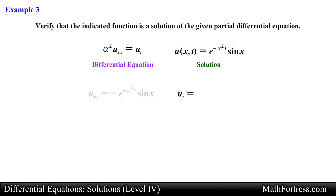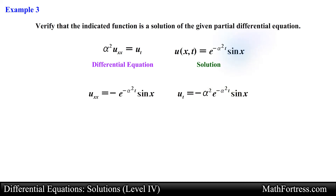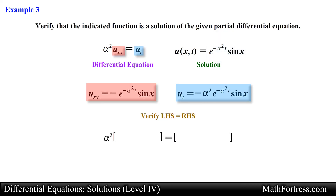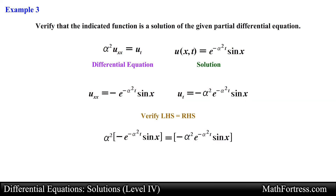Now we need to find the partial derivative of u with respect to t. Keep in mind that we treat the variable x as a constant when taking this partial derivative. Carrying out the partial derivative, we obtain the following expression. Having found all the partial derivatives, we substitute them into the PDE and make sure the left hand side and right hand side of the equation match. Substituting, we obtain the following expression.